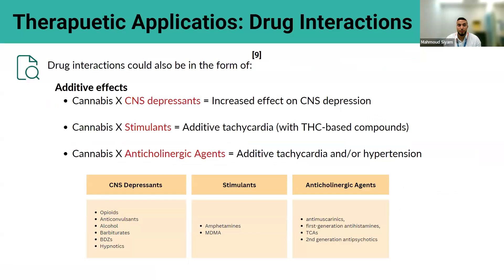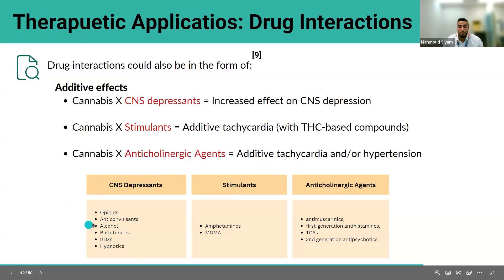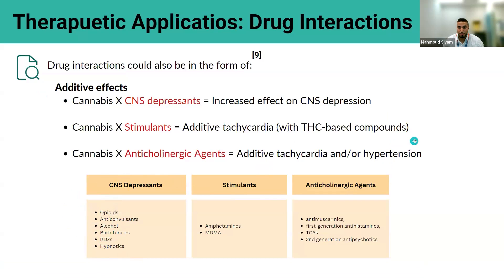Drug interactions can also occur as additive effects rather than just through the CYP enzyme pathway. Cannabis is a CNS depressant, so using it concurrently with other CNS depressants increases CNS depression. Cannabis used concurrently with stimulants can cause additive tachycardia, especially with THC-containing products. Cannabis used with anticholinergic agents could cause additive tachycardia or even a hypertensive effect. In the context of chronic pain, many patients may be on opioids, anticonvulsants like pregabalin or gabapentin, or benzodiazepines — so drug interaction checks are very important before adding medical cannabis.